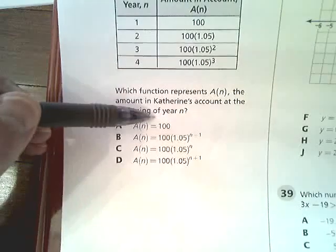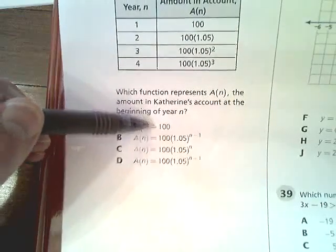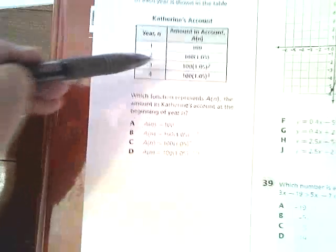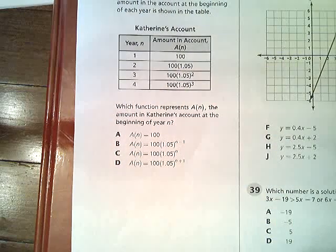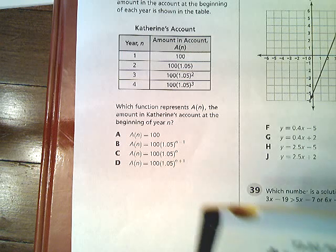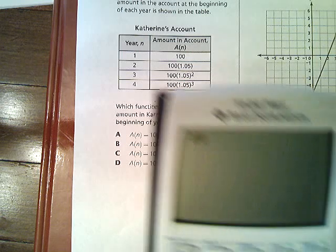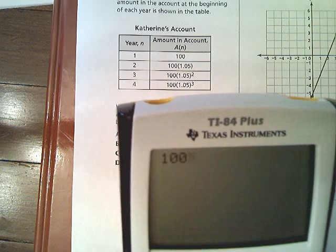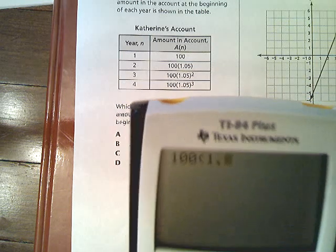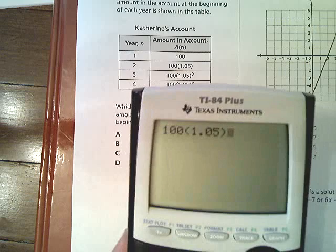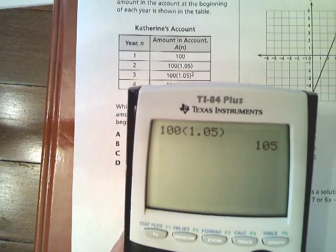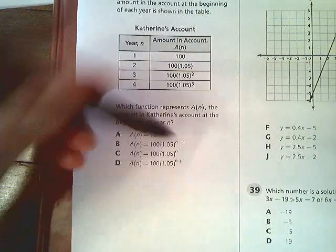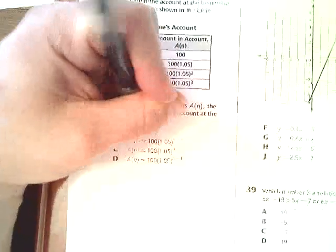Option A says that A sub n is 100. If that were true, then in year 2, our answer would also give us 100. But as you can see, 100 times 1.05, which represents 5% interest, gives us more than 100. So you know it's not A.